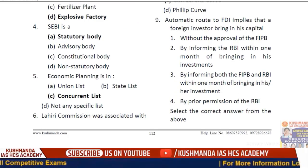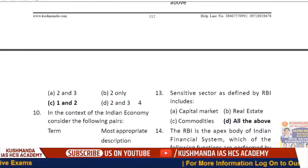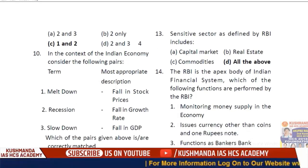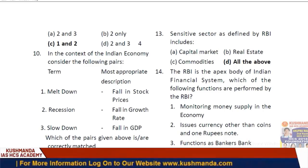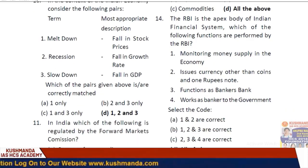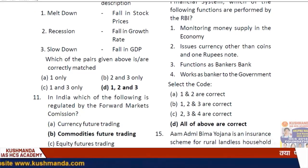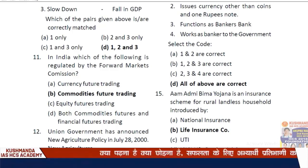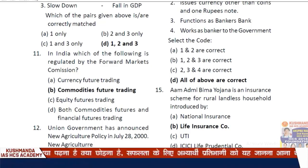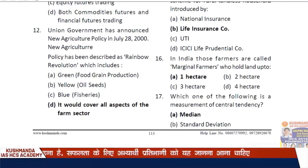Question 10: In the context of the Indian economy, consider the following pairs — meltdown, recession, slowdown. The answer is D, option 3. Question 11: In India, which of the following is regulated by the Forward Markets Commission? The answer is option B — commodities futures trading.